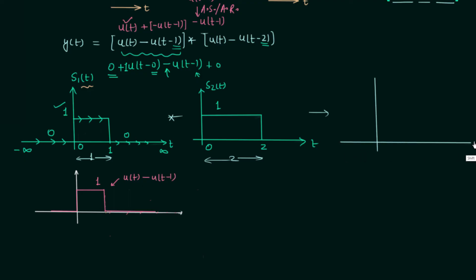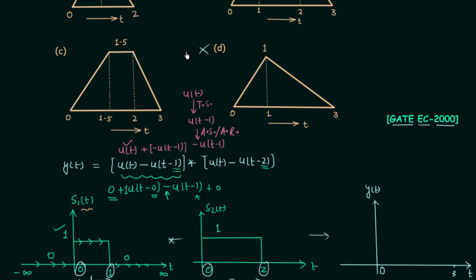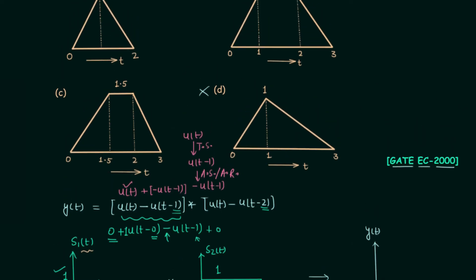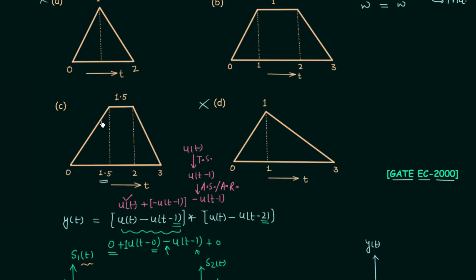We have everything to plot the exact waveform of the resultant signal y(t). First, find the extension: both s1(t) and s2(t) start becoming non-zero at t=0, so 0+0=0 is the start of y(t). Adding the durations: 1+2=3, so after t=3 the signal becomes 0. Now find the instant up to which the signal increases linearly — we focus on the minimum width, which is 1, measured from the starting point t=0.